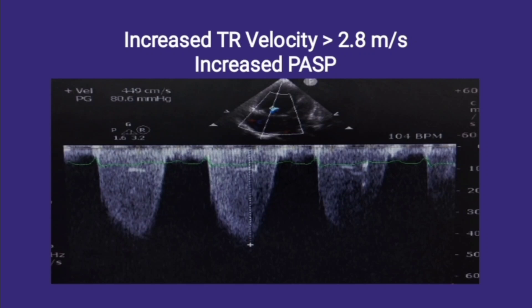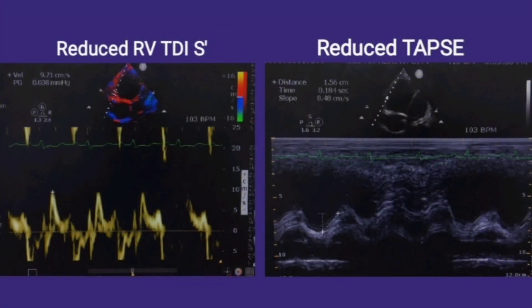To assess tricuspid regurgitation, we put continuous wave Doppler at the level of the tricuspid valve. A TR jet velocity of more than 2.8 meters per second may suggest increased PA pressures. A PASP of less than 35 mmHg is normal, from 35 to 45 mmHg is borderline, and more than 45 mmHg is considered increased PA pressure.